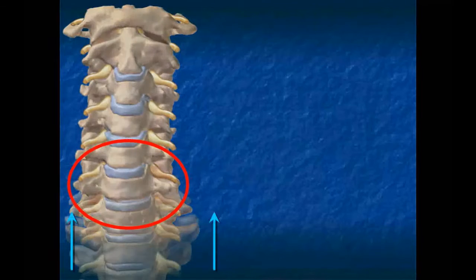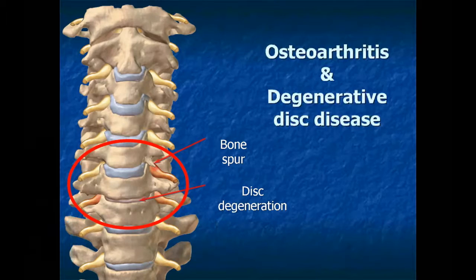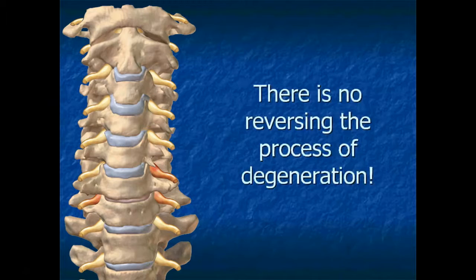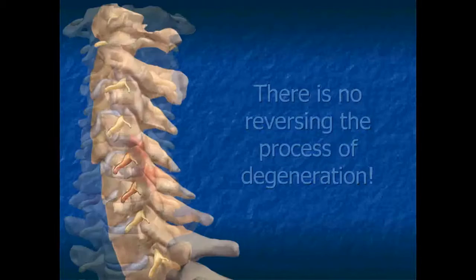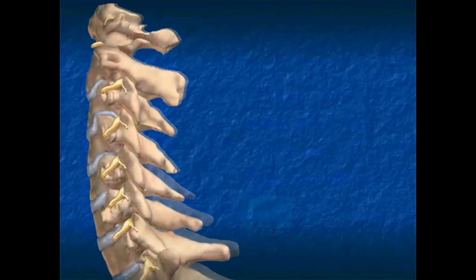Quite often, disc degeneration combined with bone spurs and wear and tear of the vertebrae occur at the same time. These changes in the health of the cervical spine and its discs are forms of osteoarthritis and degenerative disc disease. Once a disc has begun to degenerate, there is no reversing the process. Therefore, it is important to improve the alignment of the cervical vertebrae to help prevent the advancement or worsening of disc degeneration.